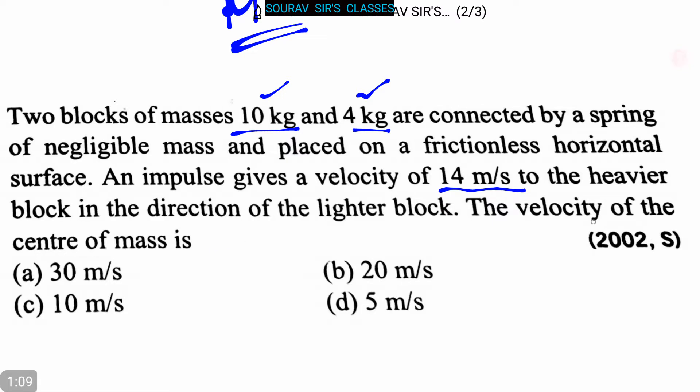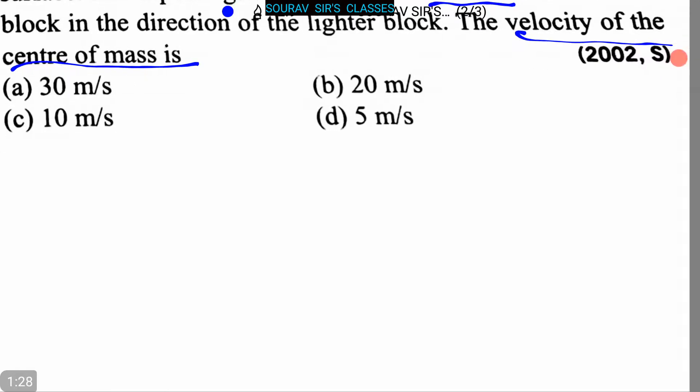The velocity of the center of mass is: (a) 30 m/s, (b) 20 m/s, (c) 10 m/s, or (d) 5 m/s. Now let's proceed to the solution.